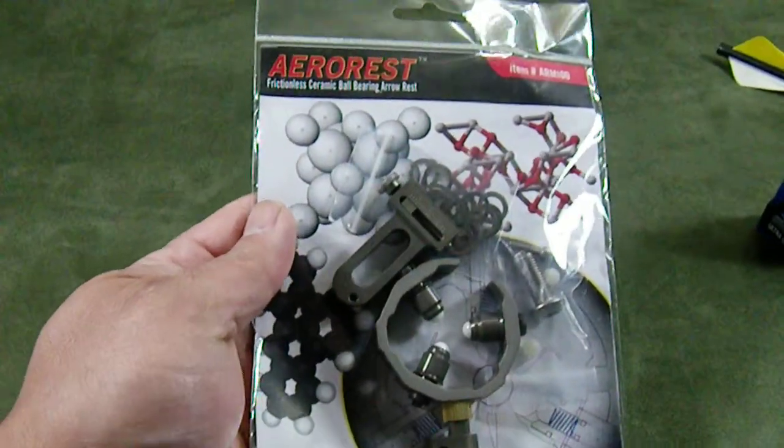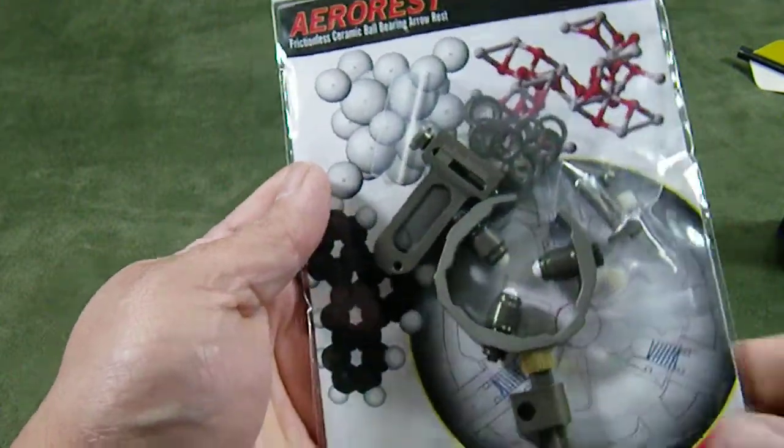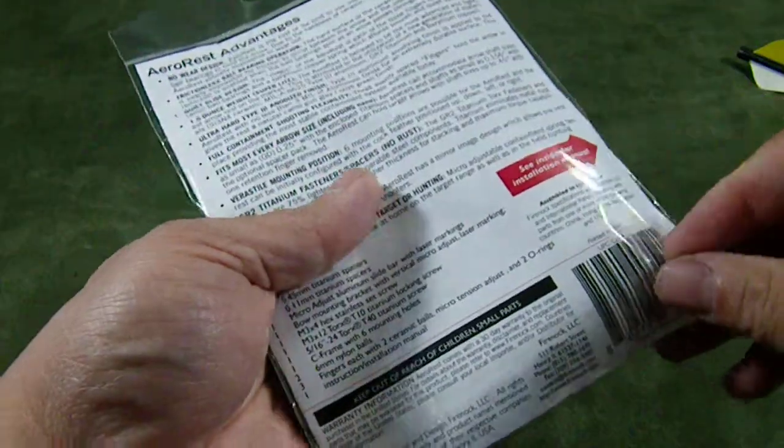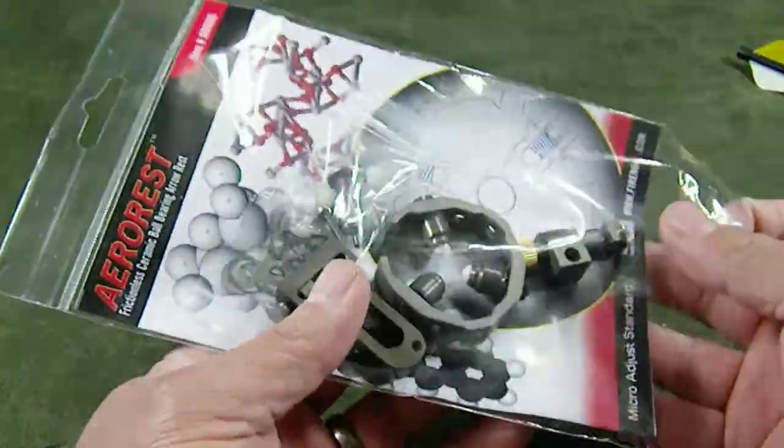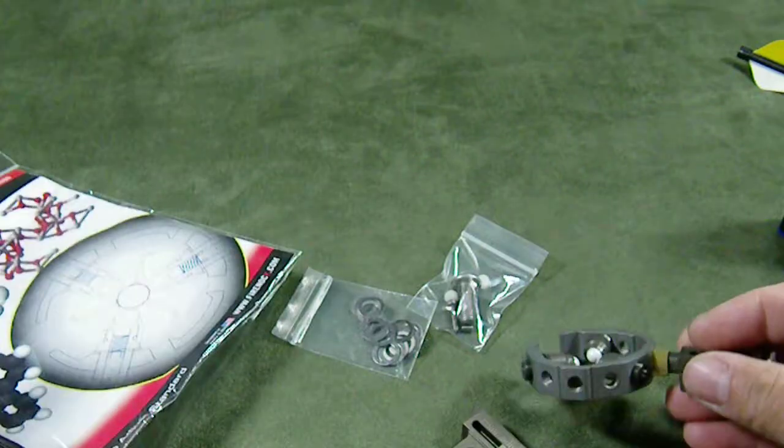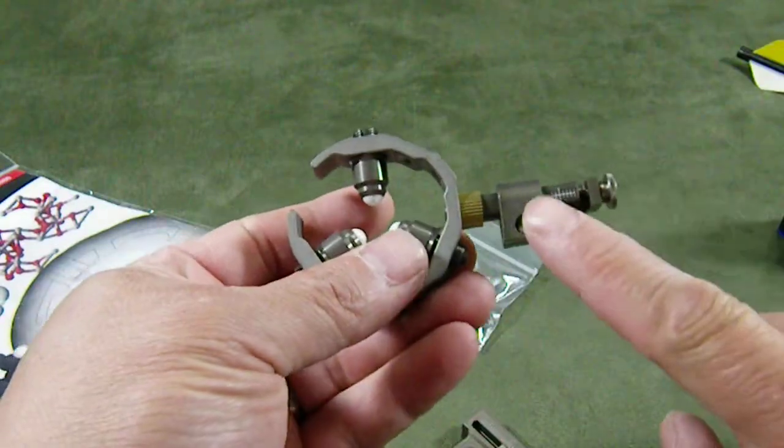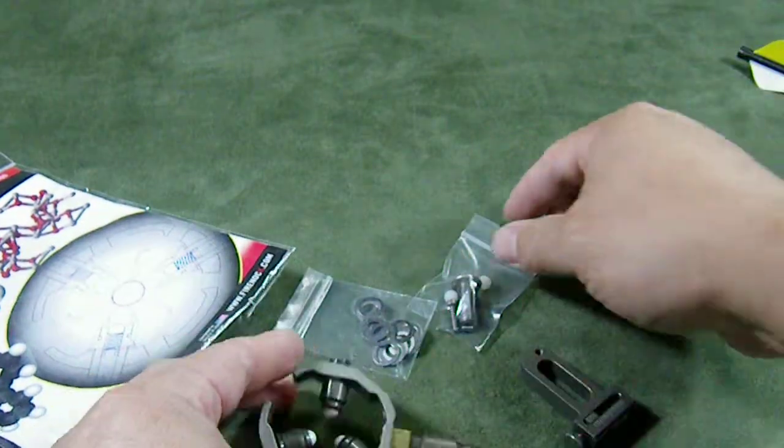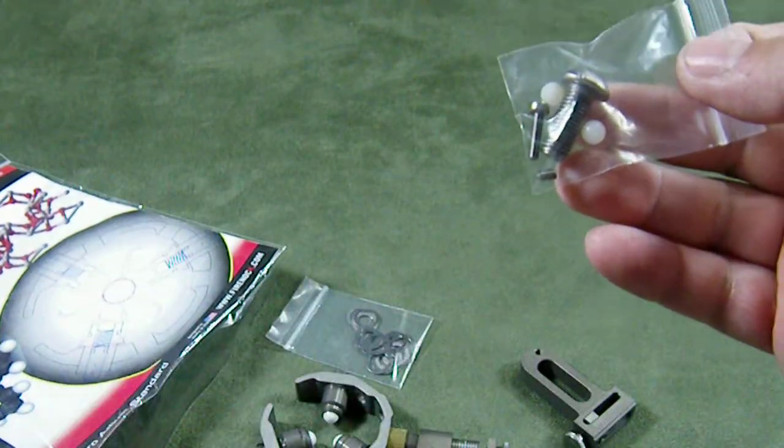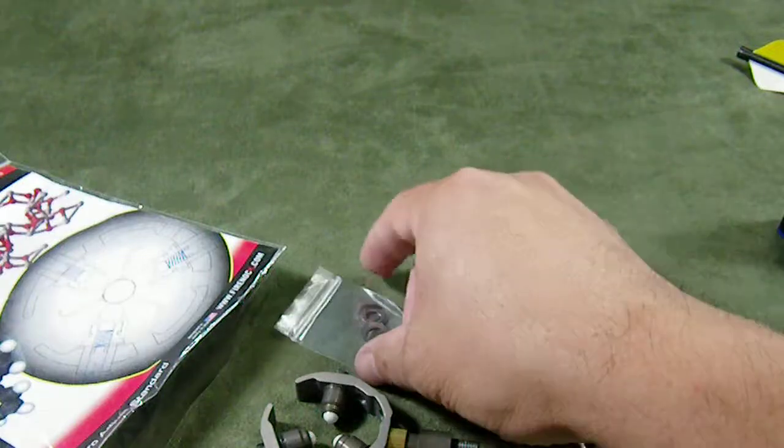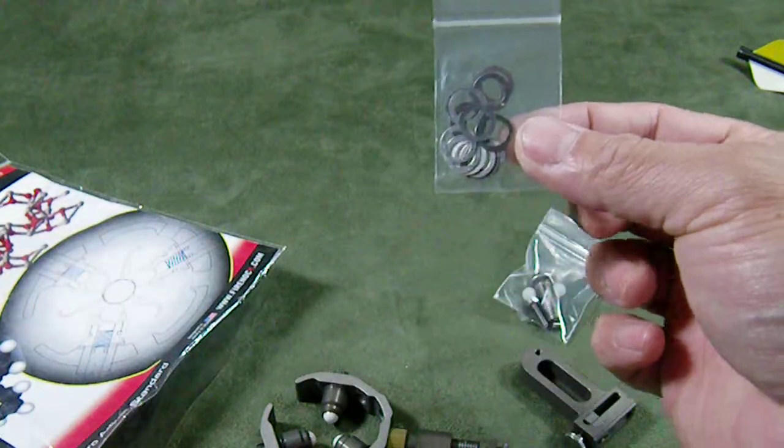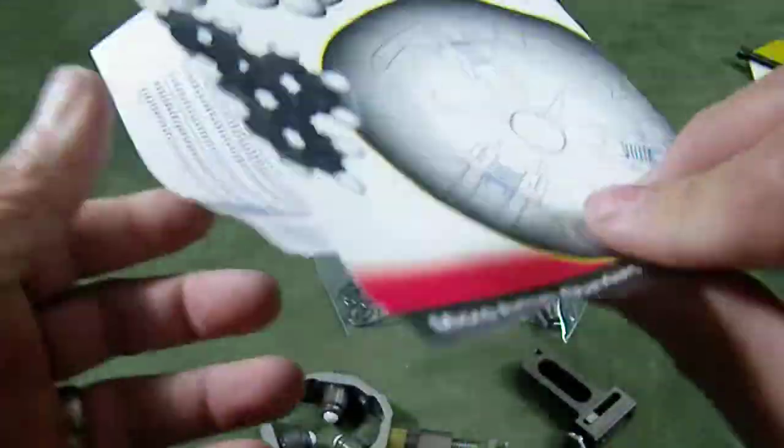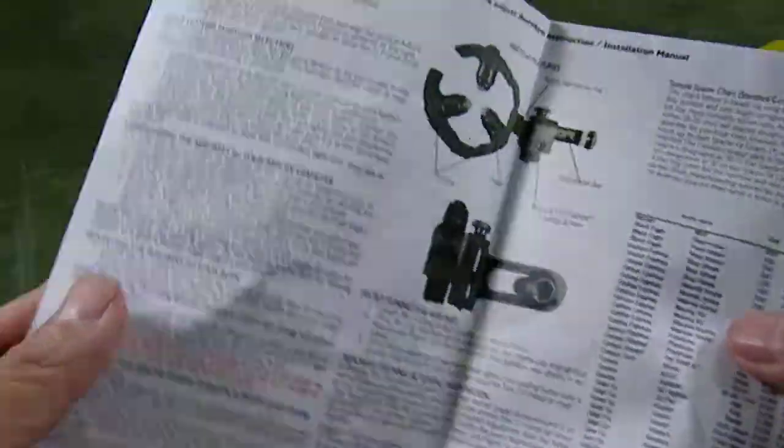This is a pack of FineNut micro adjust arrow rest. As usual, the packaging is very simple to open. Inside you will find the micro adjust rest itself, the side bracket, the bow mount bracket, a bag of screws with three screws and two nylon bows, and a set of titanium spacers. Very important - inside there is a full description of how and what is needed.